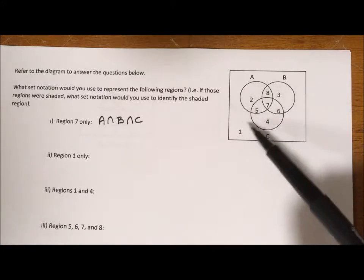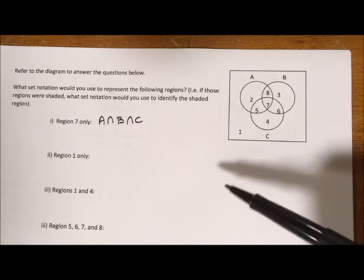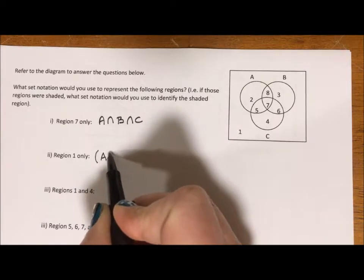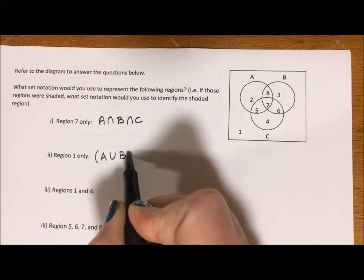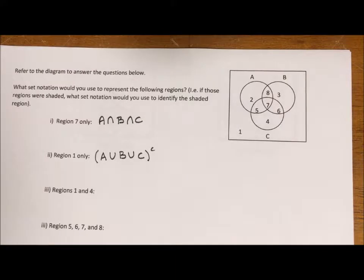say I do want 2, 3, 4, 5, 6, 7, and 8 and then do the complement. Everything but. So in this case I'm going to say A union B union C and then look for the complement and that should give me the outside region 1.